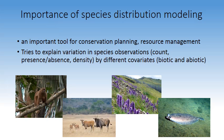Species Distribution Modeling is an important tool in ecology. It helps us understand the basic biology of species and their habitat use, but it is also an important tool for conservation planning and resource management, especially for species with important economic and cultural value such as salmon in the Pacific Northwest. These models try to explain variation in species observations using covariates such as environmental factors like temperature, depth, and precipitation, as well as anthropogenic factors such as fishing pressure.